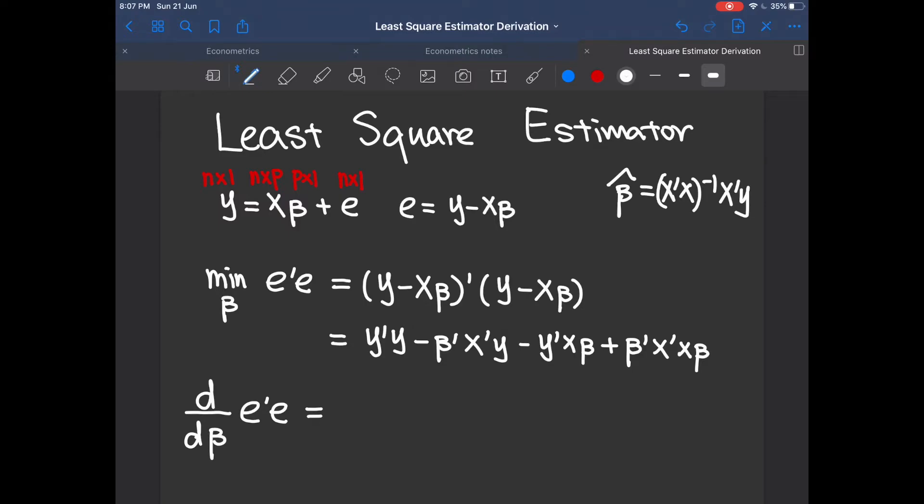You can see the first term has nothing to do with beta, so you get zero here. Then you minus. So here there is a beta and it's a beta transpose in the front of the expression. So you keep the rest of the expression here which is x transpose y. And also you minus.